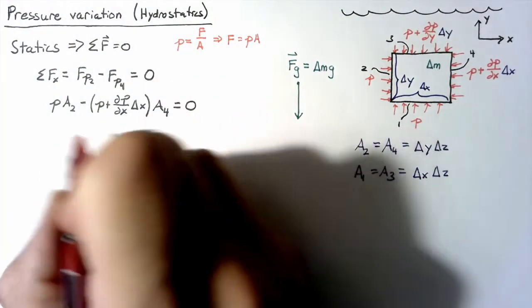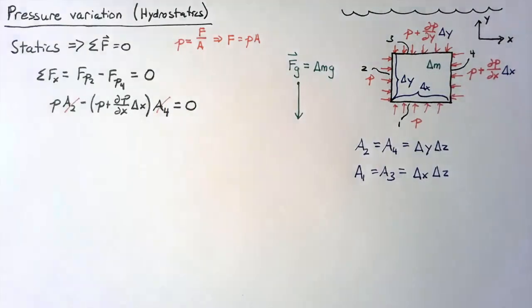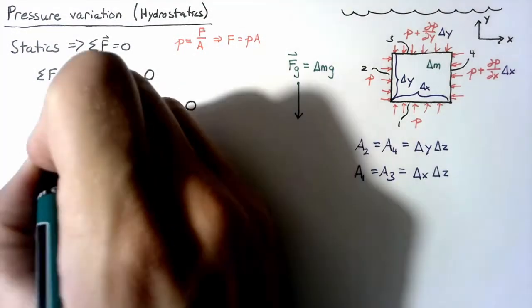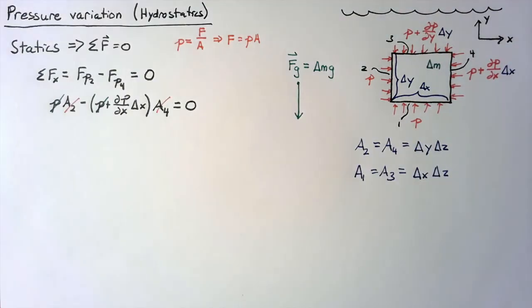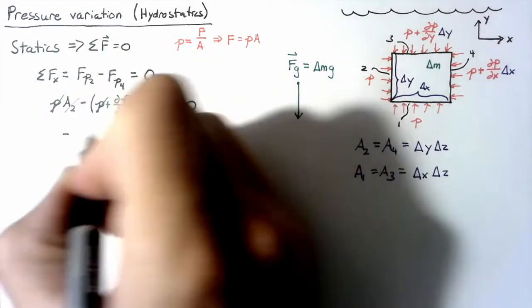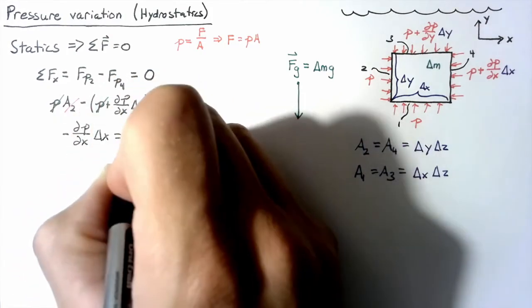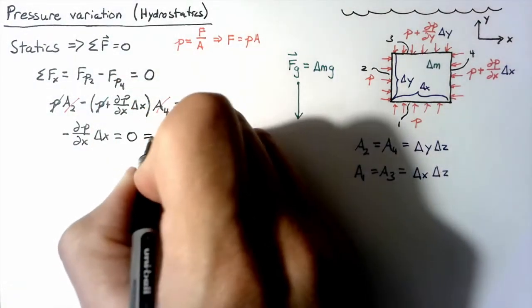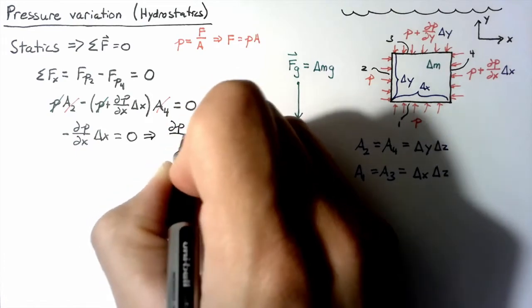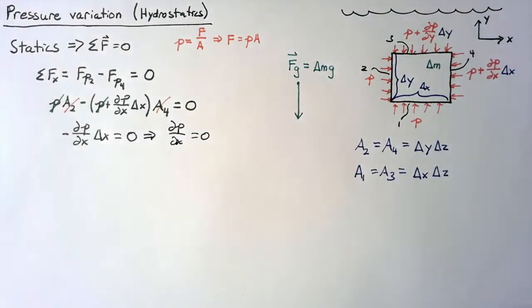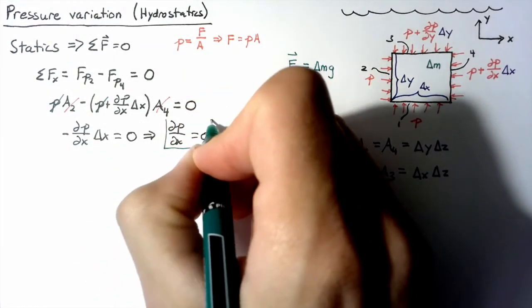All right, a2 and a4 are the same, so we can divide through the entire equation by them. And once we do that, we can subtract out the P's. So we end up with a negative dp dx times delta x is equal to 0, or we can just say that dp dx is equal to 0. This is the key result from our x analysis.